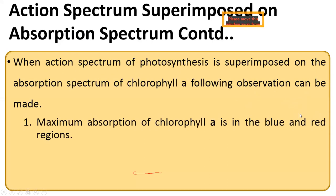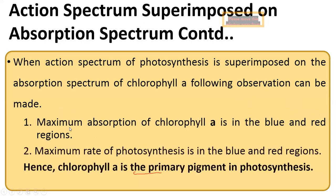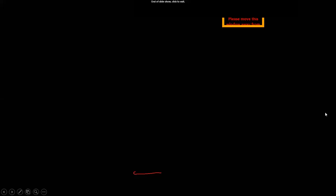When the action spectrum of photosynthesis is superimposed on the absorption spectrum of chlorophyll A, the following observations can be made: first, maximum absorption of chlorophyll A is in the blue and red regions, which means plants show a high rate of photosynthesis in these regions. Second, the maximum rate of photosynthesis is in the blue and red regions, hence chlorophyll A is the primary pigment in photosynthesis.